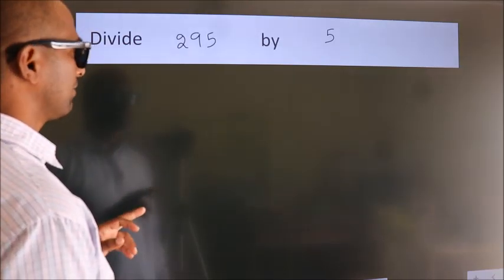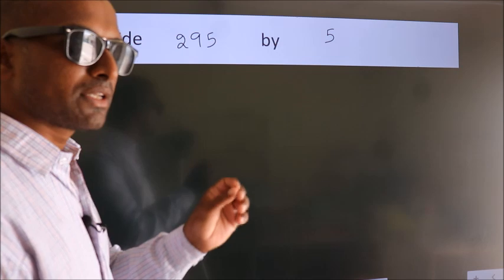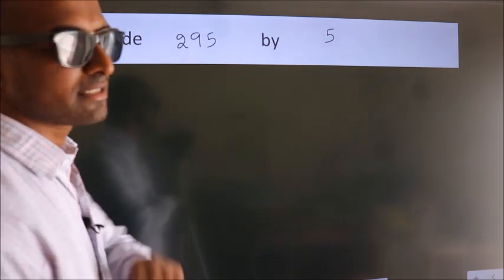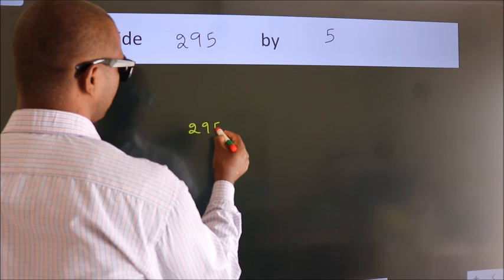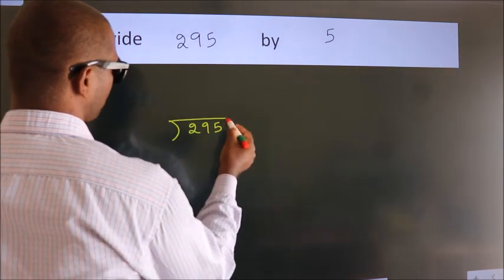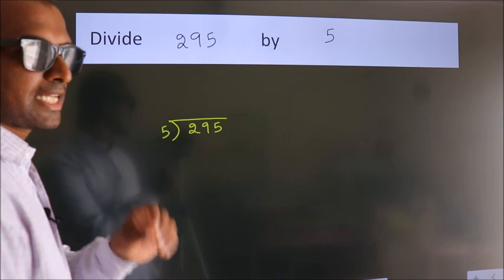Divide 295 by 5. To do this division, we should frame it in this way. 295 here, 5 here. This is your step 1.